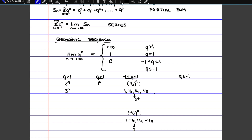If q is smaller or equal to negative 1, for example, minus 1 to the n, we can put in a few numbers: n=0 gives 1, n=1 gives negative 1, n=2 gives 1, then negative 1, and so on. So when a sequence goes in two different directions, we would say that we don't have a limit. If instead you had minus 2 to the n, that would give us 1, minus 2, 4, minus 8, and so on. The positives are going to plus infinity and the negatives are going down to minus infinity. Because it's going in two different directions, we say the limit does not exist. The difference is that minus 1 to the n was bounded between negative 1 and 1, while minus 2 to the n is unbound. But either way, the limit does not exist.